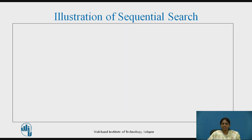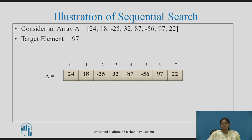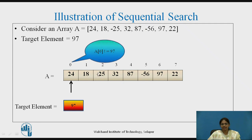Let us see an illustration of sequential search. Consider an array A with 8 elements and we want to find the element with value 97. The array stores elements from index 0 to size minus 1. A pointer is set at index 0. Comparing A[0], which is 24, with the target 97 — they are not equal, so the pointer moves to index 1. A[1] is 18, not equal to 97, so the pointer moves to index 2.